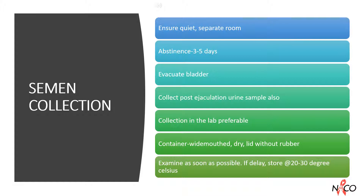The most satisfactory sample is when collection is done within the lab to enable assessment of liquefaction time. If the sample is collected at home, it should be delivered to the lab within one hour. Samples should not be collected in condoms as the powder or lubricant in condoms can be spermicidal. Home sterilized containers should not be used as detergents can be spermicidal. Water is also spermicidal, hence the container must be dry. The lid of the container should not have rubber lining as contact with rubber can result in sperm death. The sample should be examined as early as possible; if delay is likely, store at 20 to 30 degrees Celsius. Maintain confidentiality.